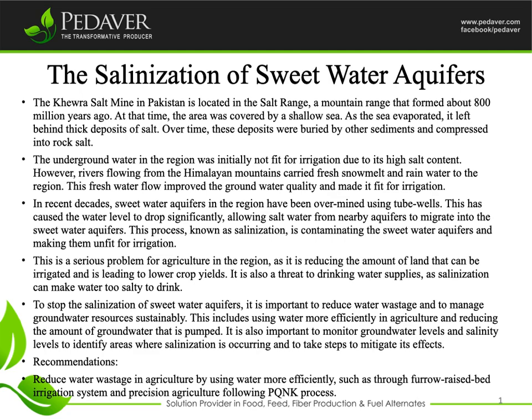This process, known as salinization, is contaminating the sweetwater aquifers and making them unfit for irrigation. This is a serious problem for agriculture in the region, as it is reducing the amount of land that can be irrigated and is leading to lower crop yields.